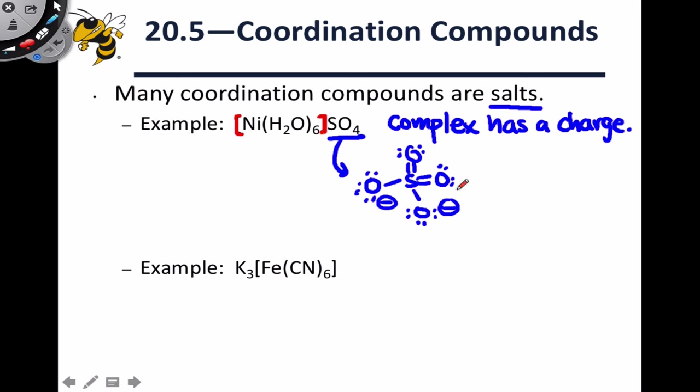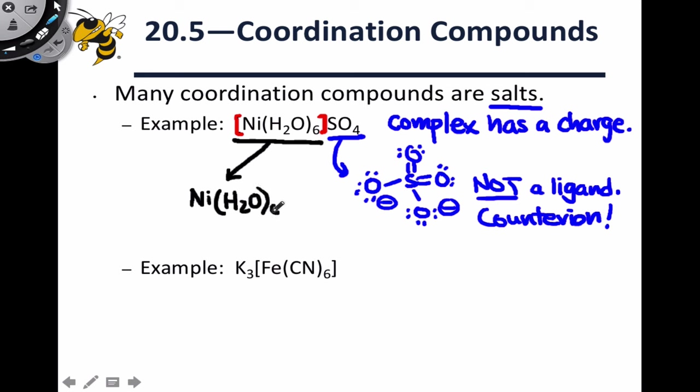Another important point here is that the sulfate ion in this case is not a ligand. It's a counterion. It just balances the charge of the complex and engages in an ionic bond with the entire nickel H2O6 2+ cation. As we've talked about in many different contexts before, it's important to be able to look at the formula and be able to separate this into its component ions, SO42- and, in this case, the newcomer, nickel H2O6 2+.